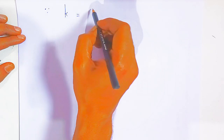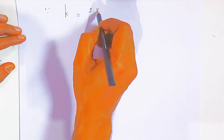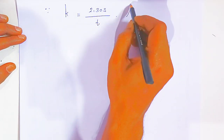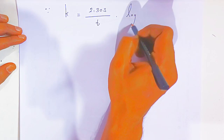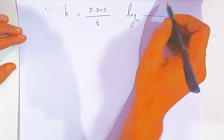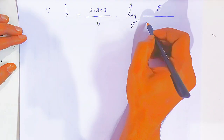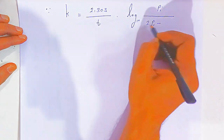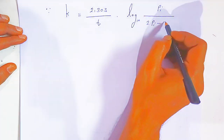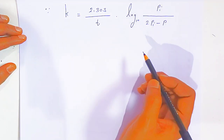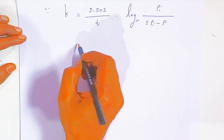Again writing the formula: rate constant k = 2.303 / t × log₁₀ of the ratio of initial pressure to the difference between twice the initial pressure and the pressure after 100 seconds. Just put in the values.